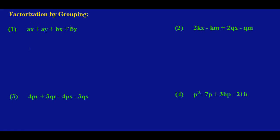I'm going to group them in pairs of two. So I'm going to group the first two terms: aX plus aY, and the other two: bX plus bY. I've grouped the terms into groups of two. Now I'm going to find what is common to aX and aY.